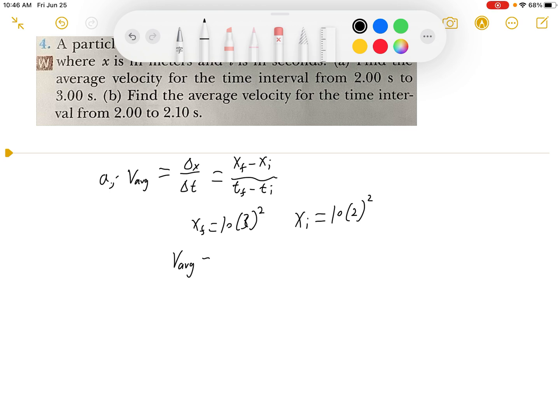The average velocity will equal 10 times 9 minus 10 times 4 over 3 minus 1. And the final answer is 50 meters per second. And this is the average velocity for part A.